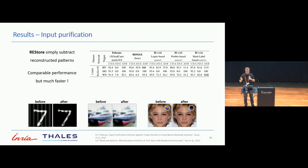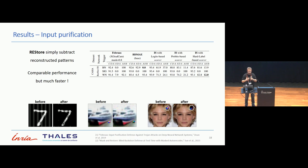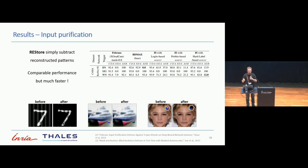Something very interesting is that the subtractive approach works for WaNet. The educated explanation here is that doing subtraction to the input space of a backdoored image using image warping works because image warping leaves some sort of input-output variation that can be recovered using rare event simulation.